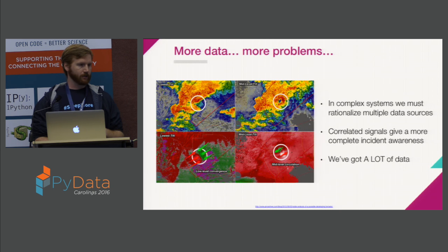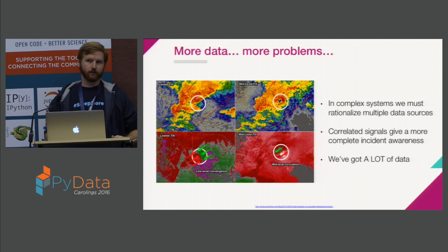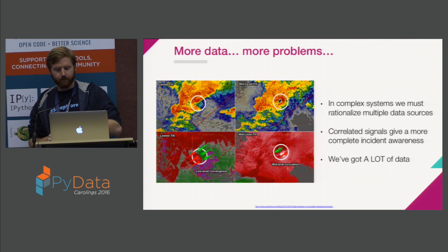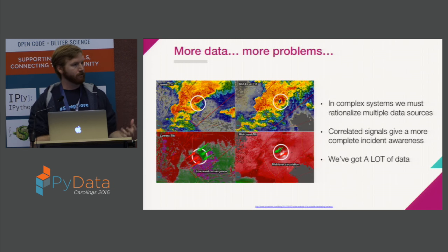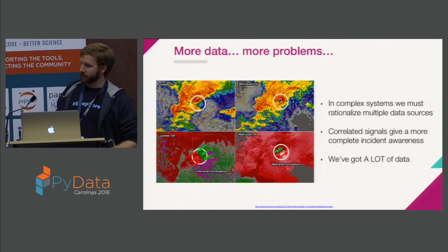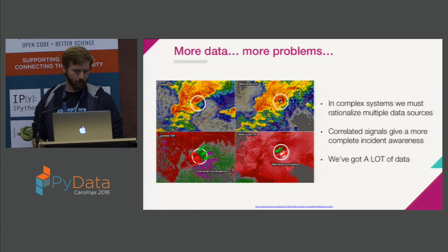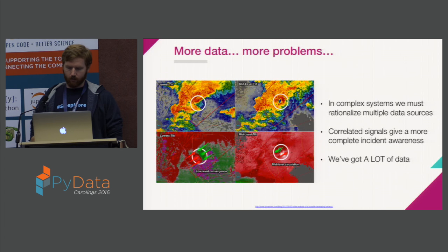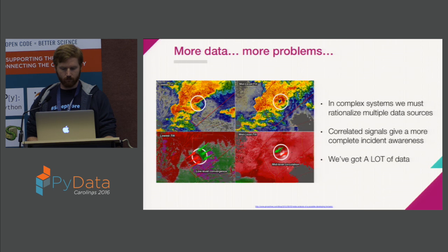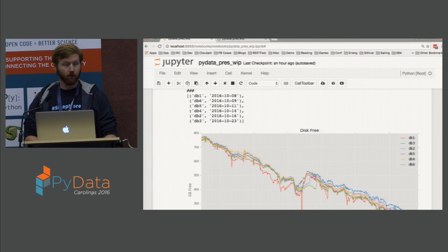In complex systems, we have to rationalize multiple data sources — or multiple sets of data from one source. It's often operations that has to do this, looking through these signals trying to figure out: is this a tornado, a hurricane, or nothing?